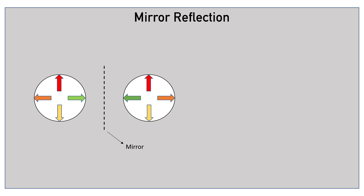Now, let us understand mirror reflection. Take the same circular object as before. When the mirror is vertical, the red and yellow arrows do not change in position, but the green and the orange arrow swap positions.